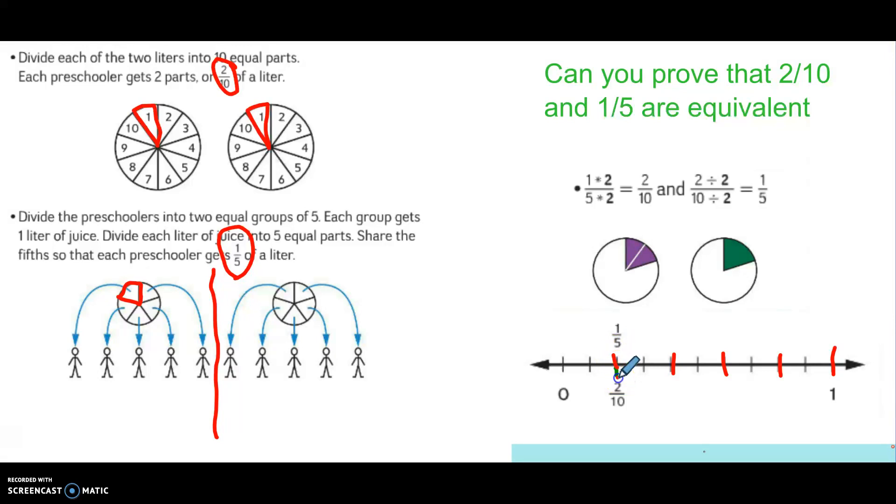One-fifth is here. One-fifth and two-tenths land on the exact same spot on my number line. They are both the same distance from zero and the same distance to get to one whole.